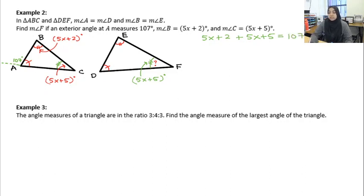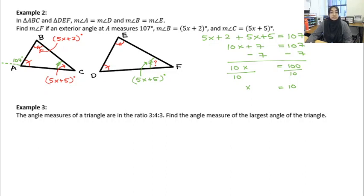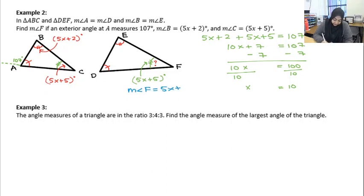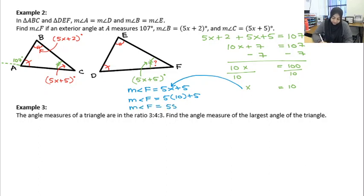Pause the video, go solve for X, and make sure you did it correctly. If you did it correctly, you will have gotten X equals 10. But I'm not done — it says find the measure of angle F. The measure of angle F is congruent to the measure of angle C, both equal to 5x plus 5. So I substitute: measure of angle F equals 5 times 10 plus 5, which is 50 plus 5, which is 55 degrees.